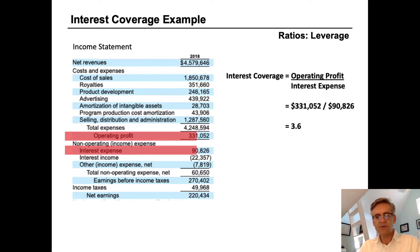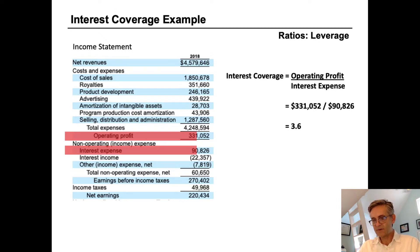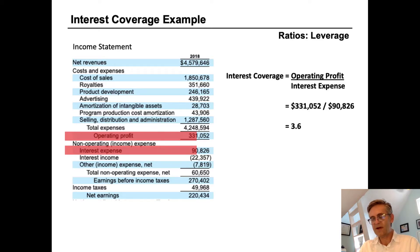So we divide operating profit by interest expense and we get 3.6 times interest coverage. This means that Hasbro has $3.6 of operating earnings for every dollar of interest that they paid in the year.